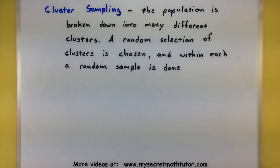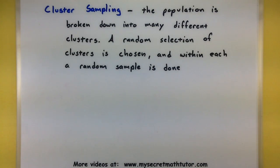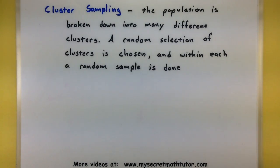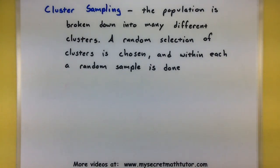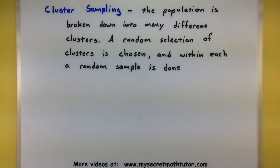This last one is known as cluster sampling. In this one, the population is broken down into many different clusters, and a random selection of clusters is chosen. Then within each cluster, you do another random sample. So this one involves a lot of random sampling, but the difference is you're grouping them together into these little clusters first.